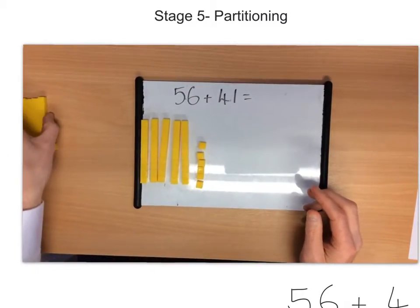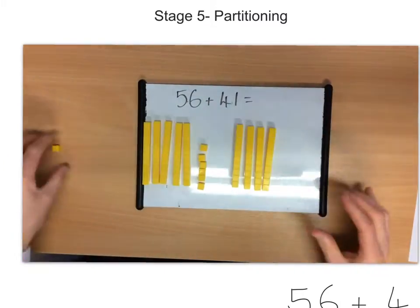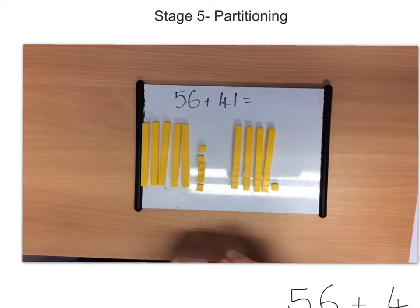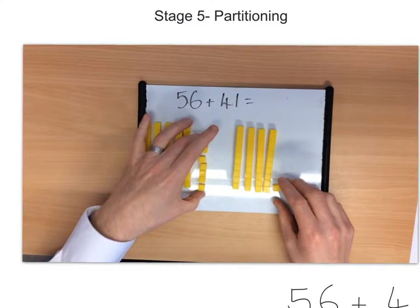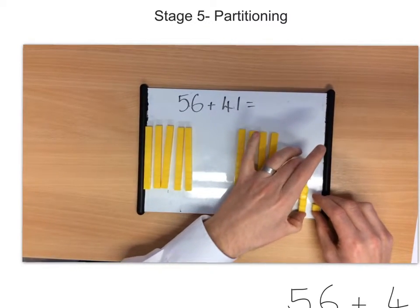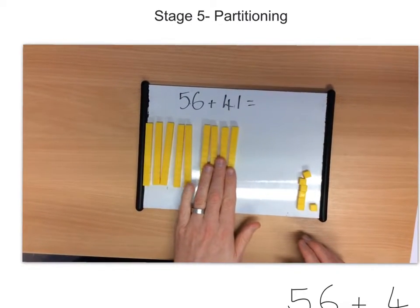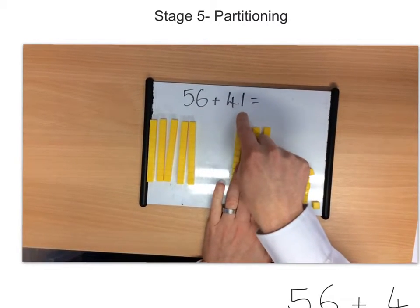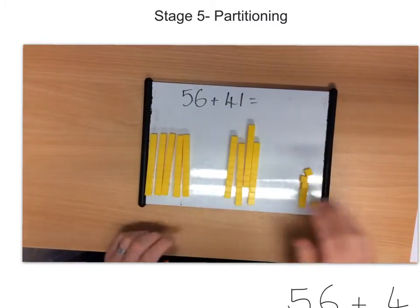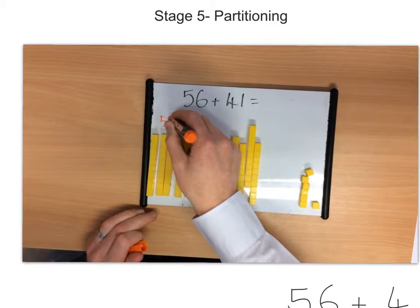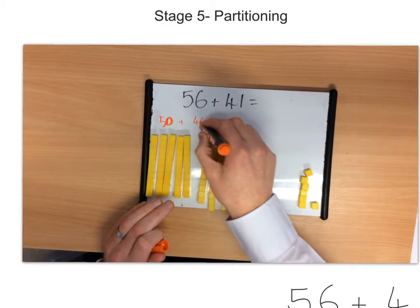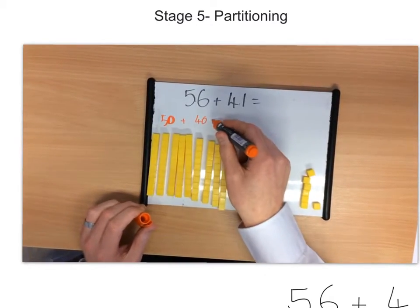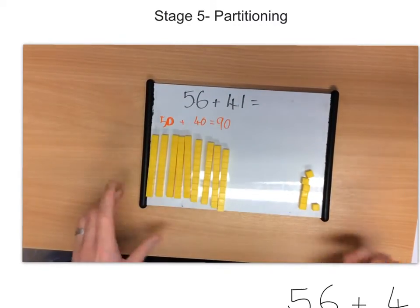So, we've got 56 plus 41, and we'll do the same with the 41, we have 4 10s and a single 1. So, by partitioning, it allows us to actually just focus on the 10s first and the 1s second. I'm going to move these 1s just over here for a moment, and then I bring the 10s over here, so they're all together. Although they've been partitioned into 56 and 41, I can now just look at the 10s, which basically means I'm going to go 50 plus 40. You'll know that 50 plus 40 equals 90. So, I can double-check it with my actual resources.